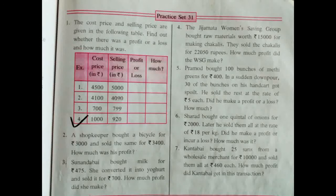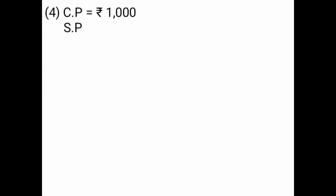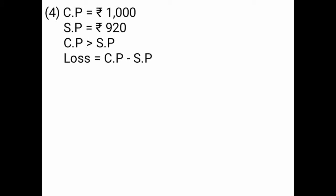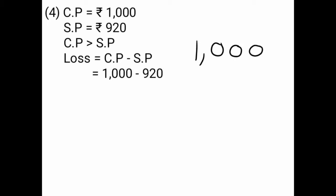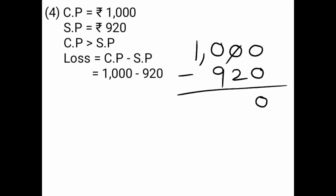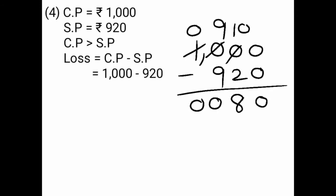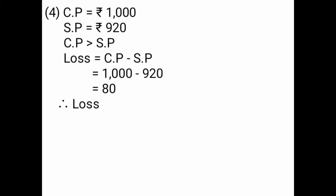Next, cost price is given Rs. 1,000, selling price is given Rs. 920. Cost price is equal to Rs. 1,000, selling price is equal to Rs. 920. Cost price is greater than selling price, so you have to find loss. The formula of loss is cost price minus selling price, that is Rs. 1,000 minus Rs. 920. I have subtracted and I am getting the answer Rs. 80. Therefore, loss is equal to Rs. 80.